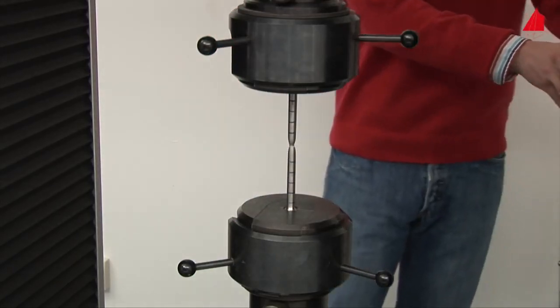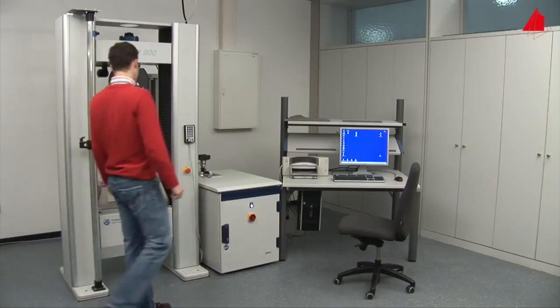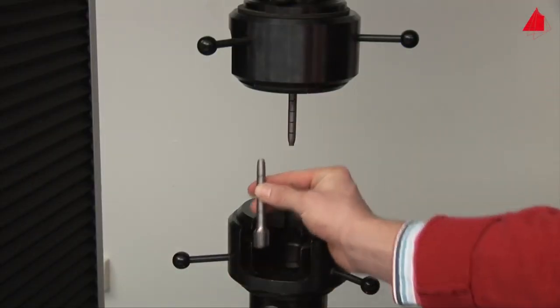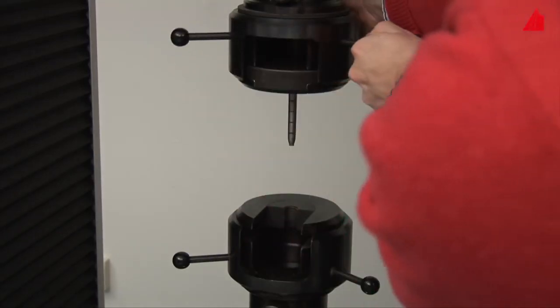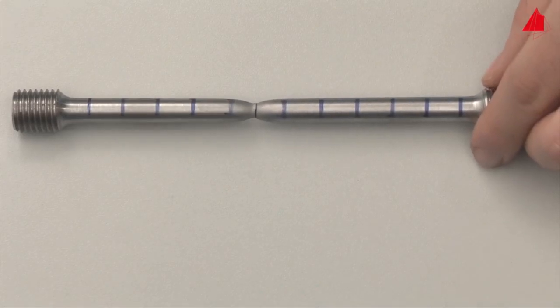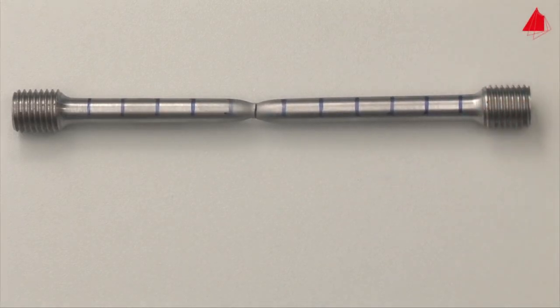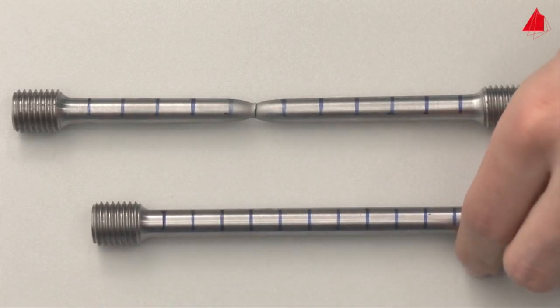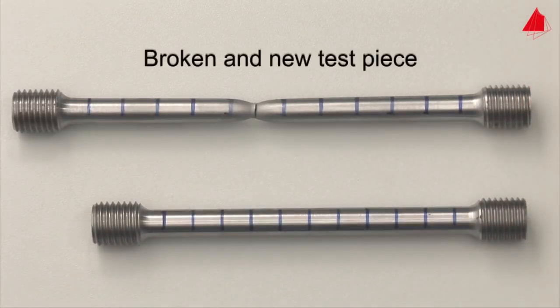In the last step, the tester swings the extensometer back into its resting position and removes the broken test piece. On the work table he puts the fragments back together again. With the help of the distance marks, the percentage elongation after fracture can be determined. This is the permanent strain after fracture and amounts to about 30 percent in this example. Please note that the percentage elongation after fracture depends on the length to diameter ratio.